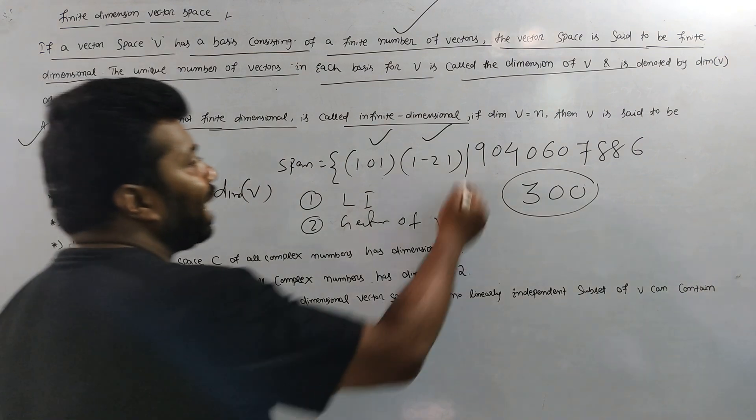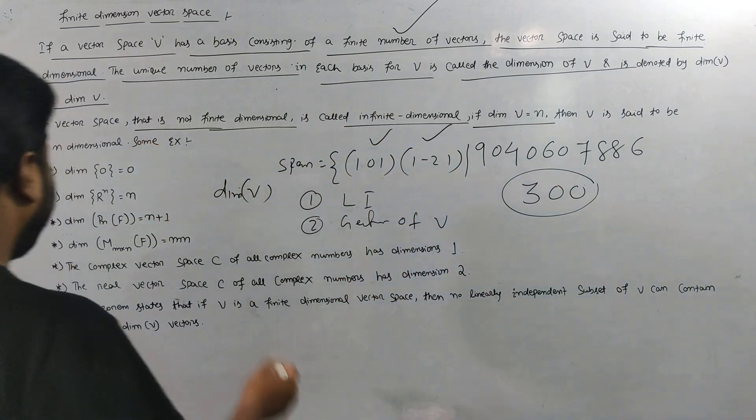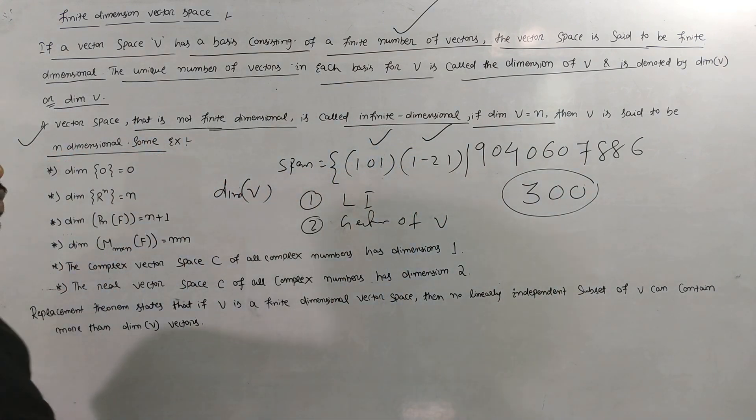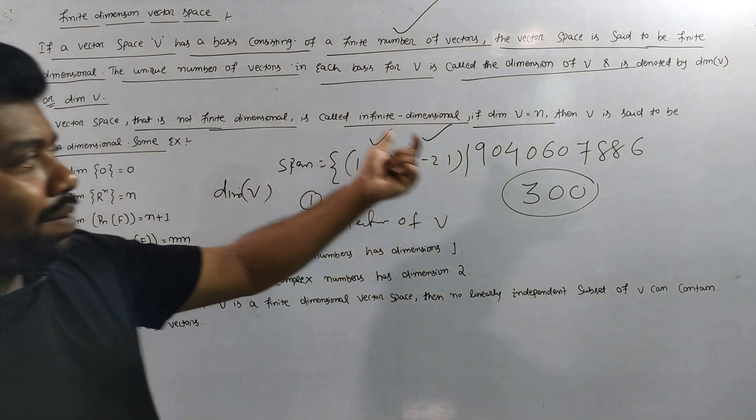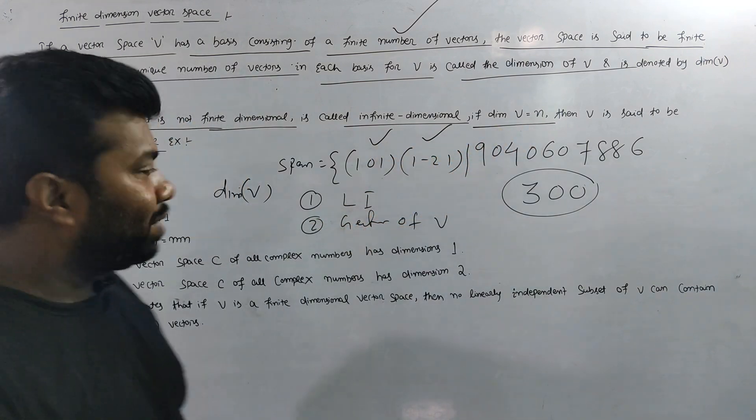If the dimension of V is equal to n, then V is said to be n-dimensional. So the value of the vector space shows that the dimension of R^n is n, so it will be n-dimensional.